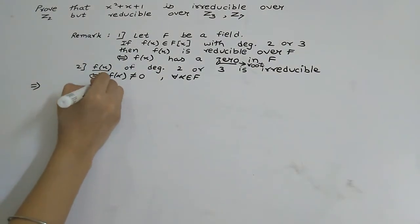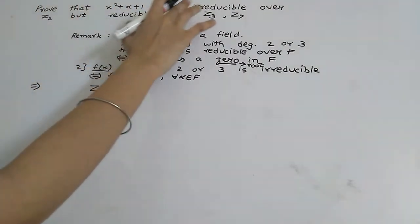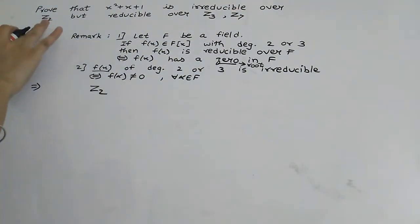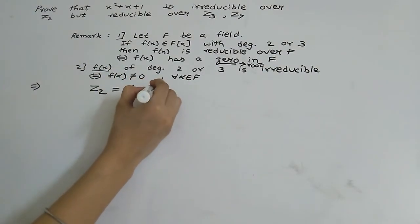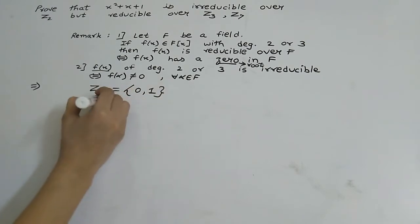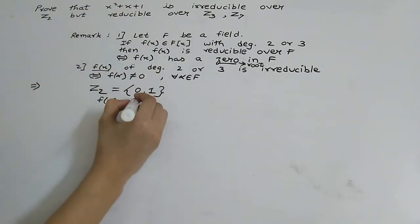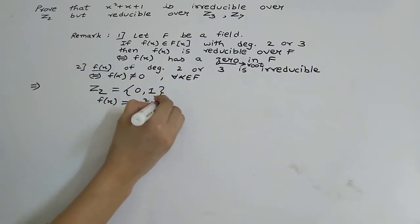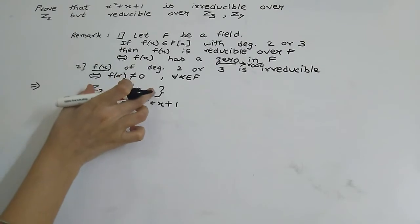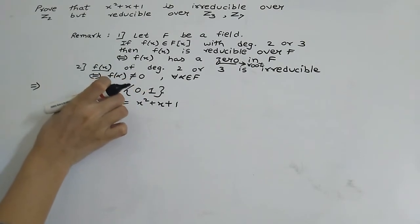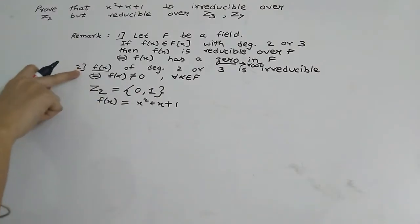Now for Z₂, we want to show x squared plus x plus 1 is irreducible over Z₂. The elements of Z₂ are 0 and 1, and f(x) = x² + x + 1. To prove irreducibility, we are going to use the second remark.